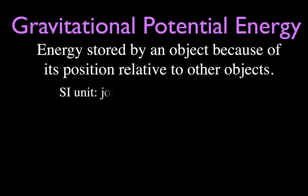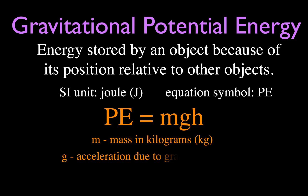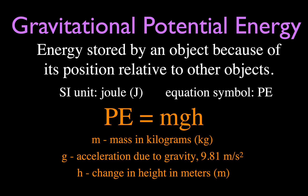For potential energy, potential energy is stored energy. We're talking about gravitational potential energy — the energy stored by an object because of its position relative to other objects. Really, it's the energy an object has because it has some height above some surface.